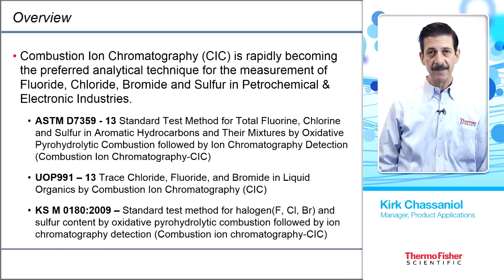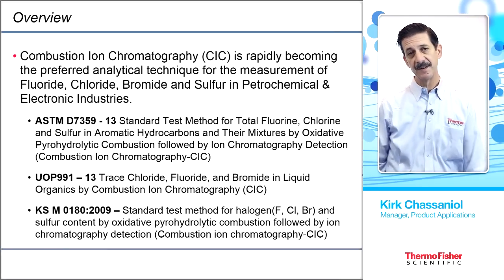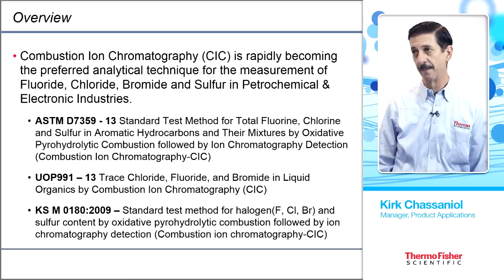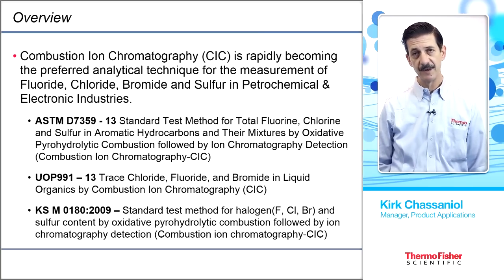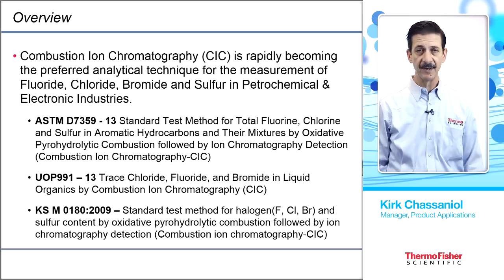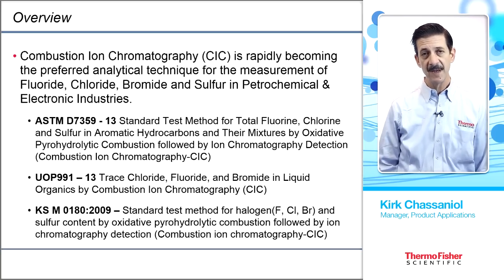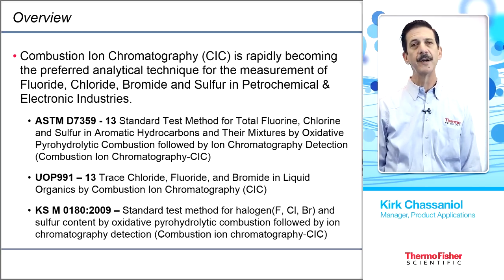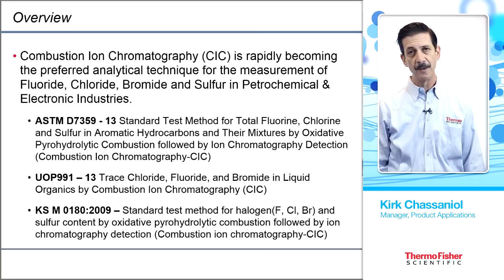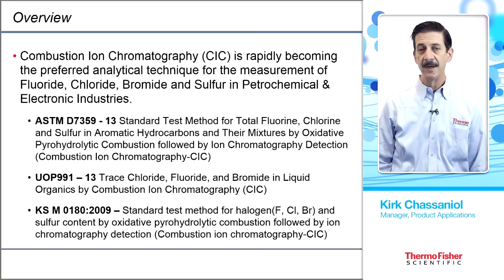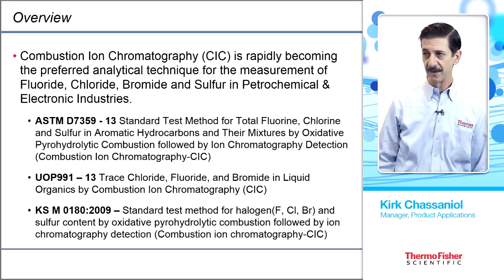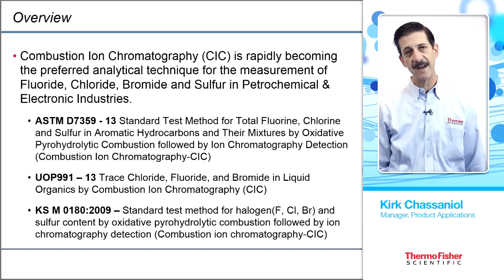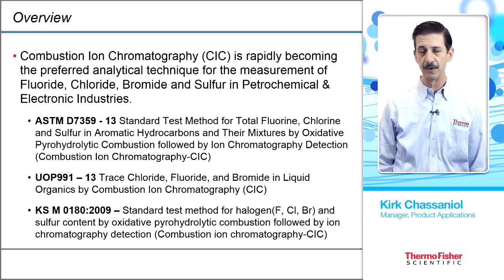Combustion ion chromatography is rapidly becoming a good technique for the analysis of halogens in a wide variety of matrices that don't necessarily dissolve in water — fluoride, chloride, bromide, and sulfur — in the petrochemical and electronics industries. There are regulatory methods associated with the technique. ASTM has a method, the standard test method for total fluorine, chlorine, and sulfur in aromatic hydrocarbons followed by pyrohydrolytic combustion. There are also two UOP methods as well as a standard within Korea for analysis of halogens using combustion ion chromatography.